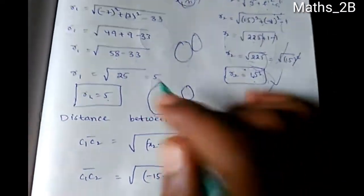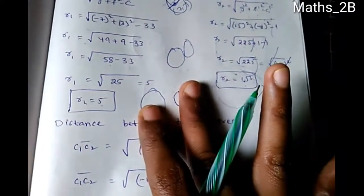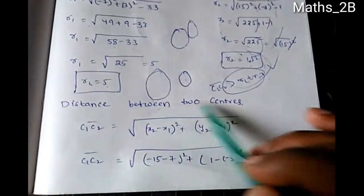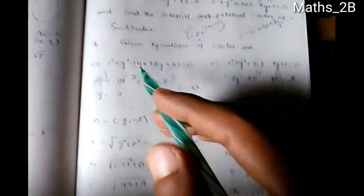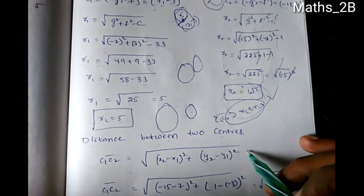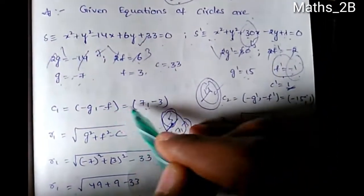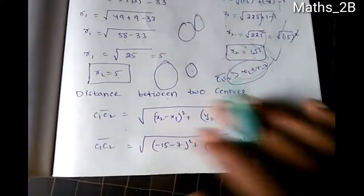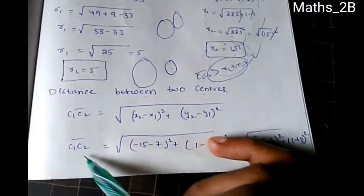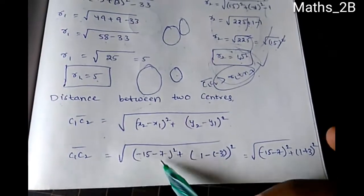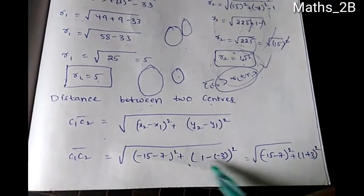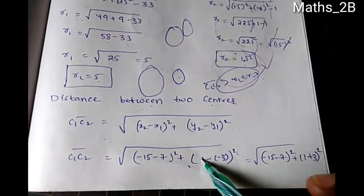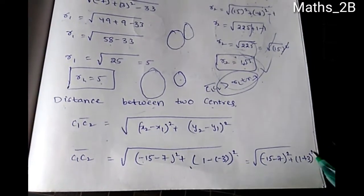We have to prove that C1C2 > R1 + R2. Using the distance formula with C1 = (7, -3) and C2 = (-15, 1), the C1C2 distance equals √((-15 - 7)² + (1 - (-3))²) = √((-22)² + (4)²).